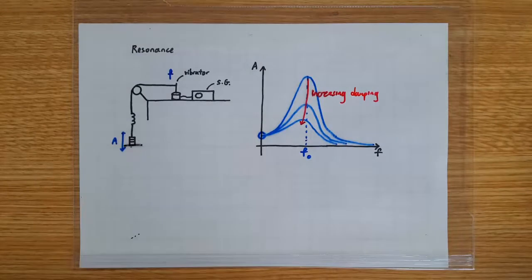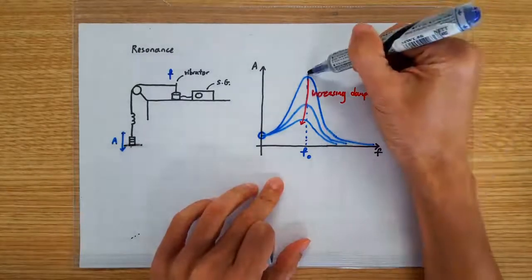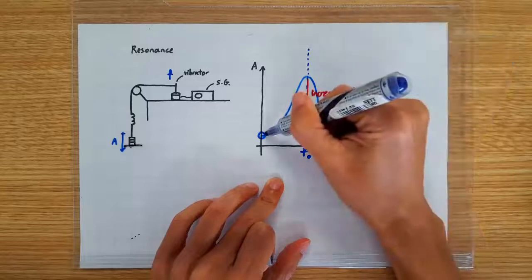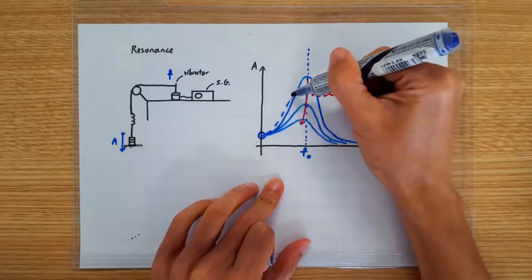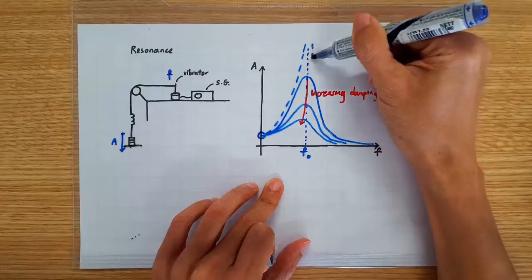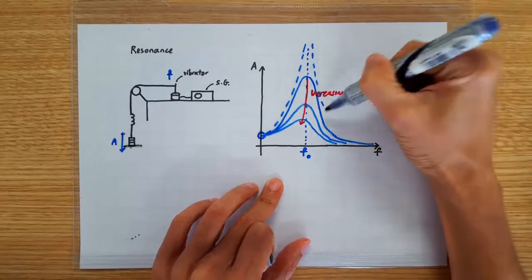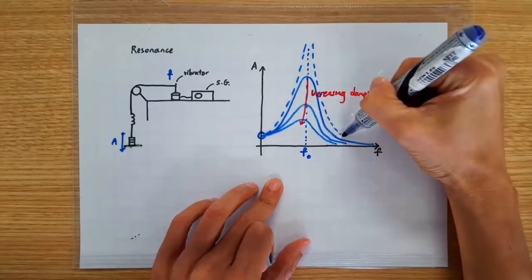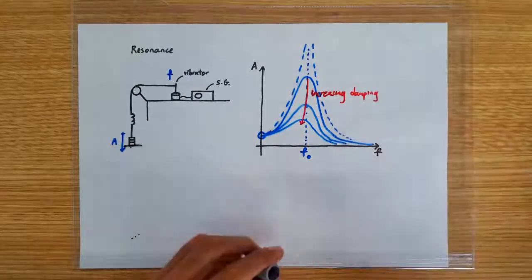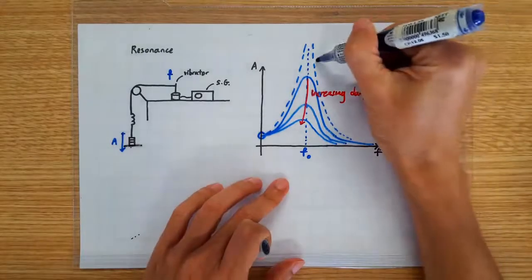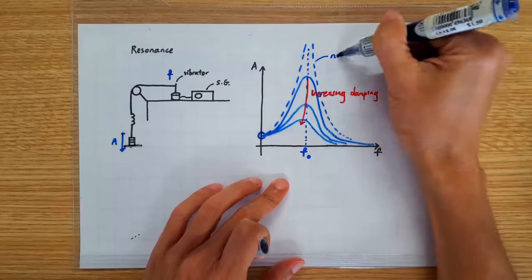And sometimes you also see another graph being sketched and that's the one that is usually drawn in dashed lines, which shows the amplitude of forced oscillation actually reaching infinity. This is supposed to represent the ideal case when there's no damping.